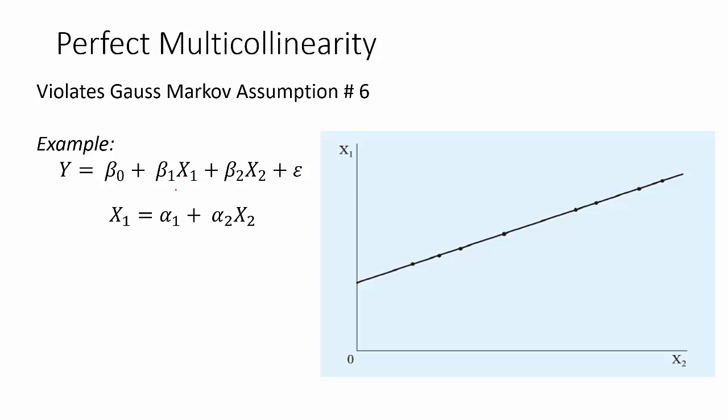So I have an example here with two x's, x1 and x2. x1 is a perfect linear function of x2. In other words, for each value of x2 we might pick, we could perfectly predict what the value of x1 would be. So we really aren't able to capture the effect of two different variables in the equation.